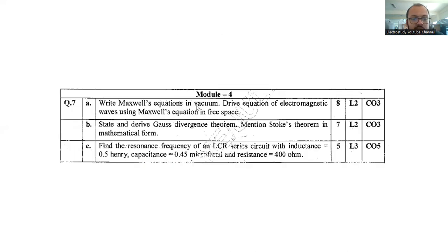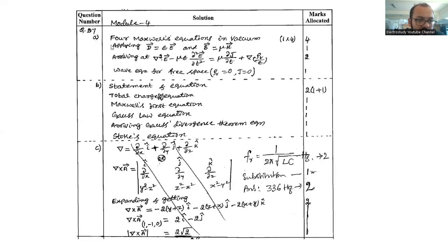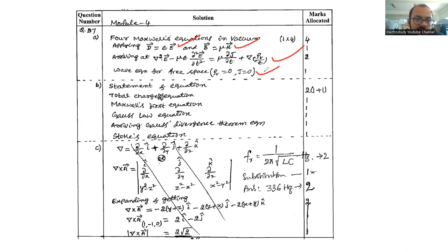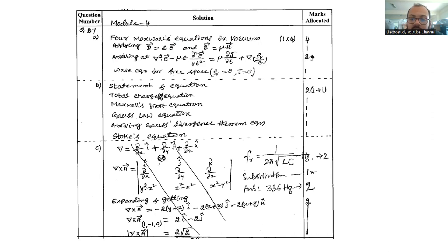Question number 7a: Write Maxwell's equations in vacuum and derive the equation for electromagnetic waves. You will study similar content in field theory later; right now you are learning the basics. Write the four Maxwell equations (1 mark each), then apply the constitutive relations D = εE and B = μH. Derive the wave equation: ∇²E = με(∂²E/∂t²). For the special condition in free space, ∇·V = 0 and J = 0. Applying conditions earns another 2 marks.